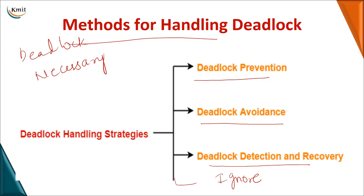Coming to the first method — deadlock prevention. In deadlock prevention, we look at the necessary conditions and ensure that at least one of the necessary conditions will not apply. If you make one of the necessary conditions false, then there is no deadlock. As an analogy: before you get a disease, you take a medicine — that is your prevention.